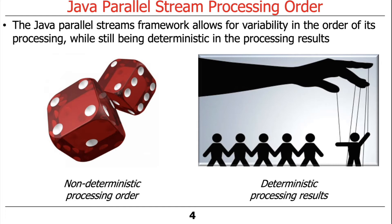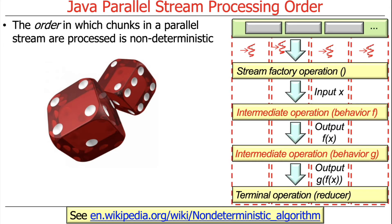However, we are still able to control the order in which the results are presented to us. So the order in which things are done could appear purely random — it's not really random, it's just optimized — but we can control the output order if we choose. Sometimes we don't choose to do that, but we have the ability.